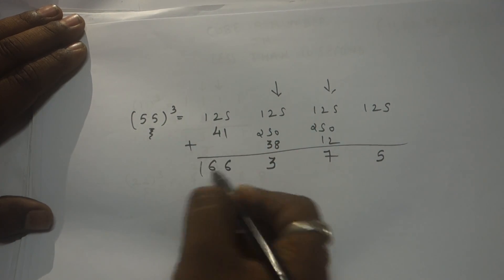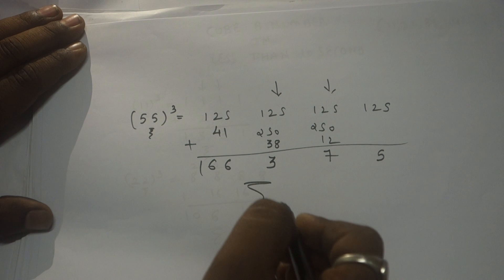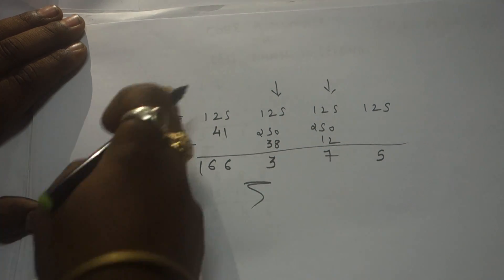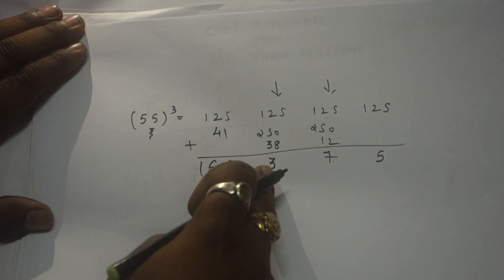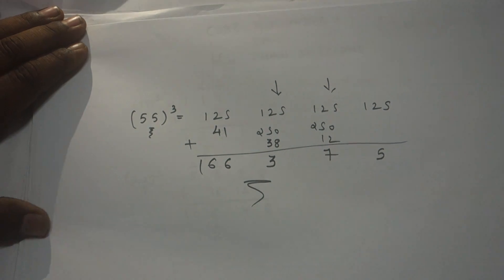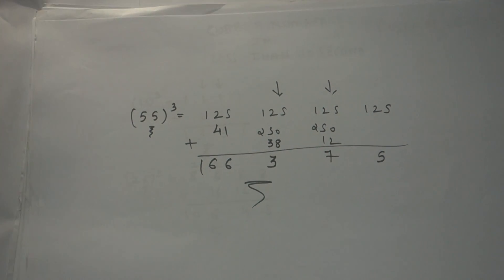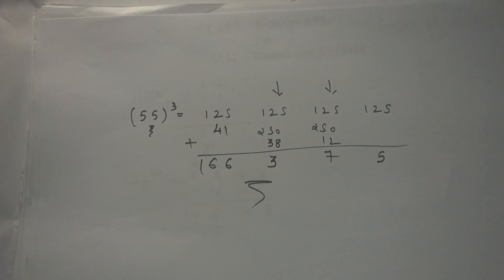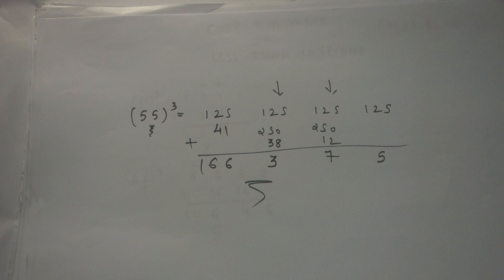So we got the answer — 55 cubed is 166375. I hope you understood the concept of how to cube a number in less than 10 seconds for repetition of the number — for 11, 22, 33, 44, 55, and so on. If you like this video, please like, share, comment, and don't forget to subscribe to my channel. Goodbye, see you in the next video.